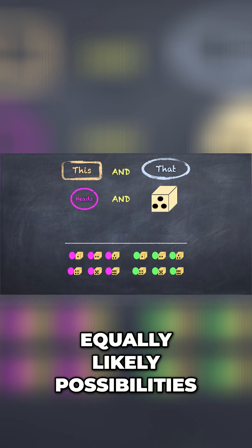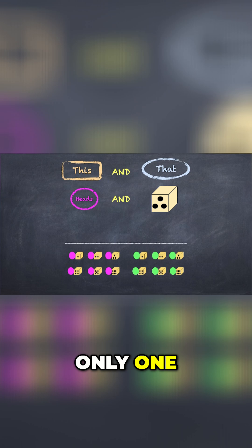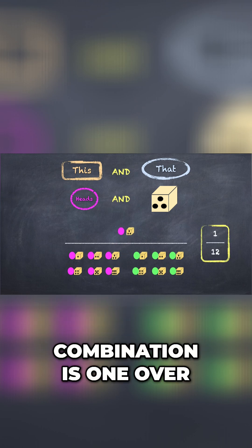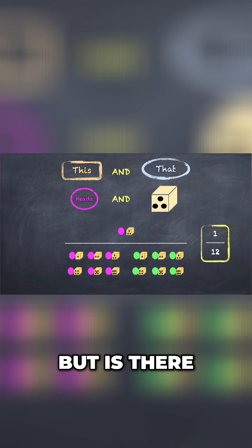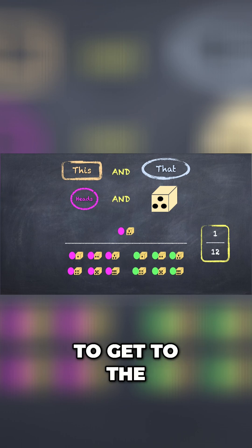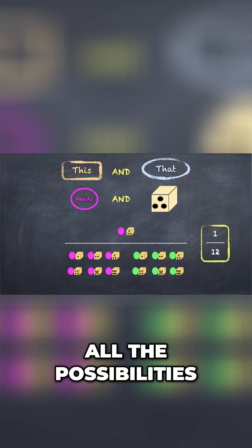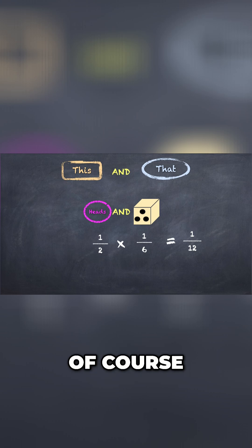Of the 12 equally likely possibilities, only one combination gives us both heads and 3. So the probability of getting this combination is 1 over 12. But is there an easier way to get to the answer without having to count up all the possibilities? And the answer is, of course, yes.